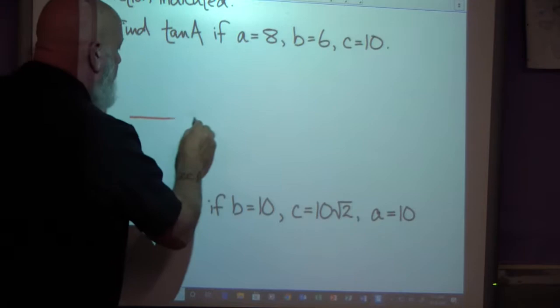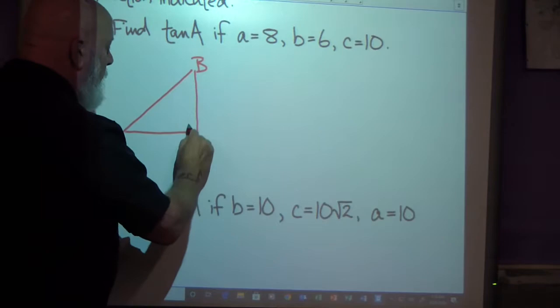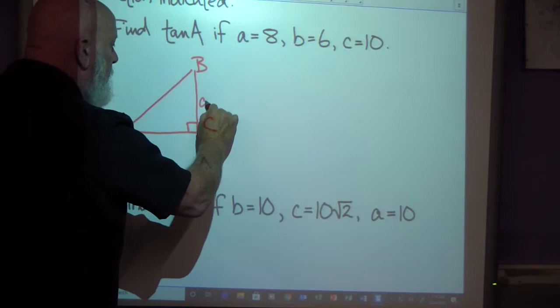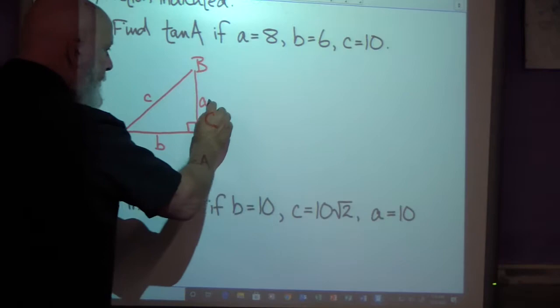I'm going to take a look at a right triangle. Try to draw one. And we'll label it A, B, and C where angle C is the right angle and then side A will be across from angle A opposite angle A. Opposite angle B will be side B. Opposite angle C will be side C.